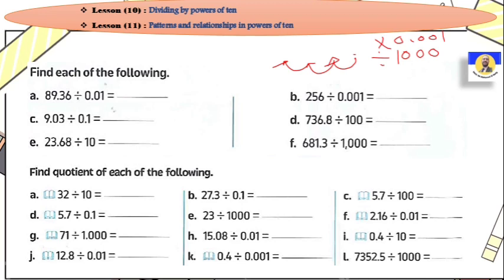لو حبينا نحل الكوسشن بتاعنا: 9.36 divided by 0.01. Divide by 0.01 أقدر أقول إنها هي هي multiply by 100. إيش عرفني؟ لأن الـ one هنا وقف في الـ hundred. واحنا اتفاقنا لما بيكون عندي divide by 0.001 يبقى multiply by 1000. نفس الكلام: divide by 0.01 يبقى نعمل multiply by 100. وده معناه بدل ما كنا هنعمل go back، المرة دي هنطلع go right two digits. So the answer will be 8936.